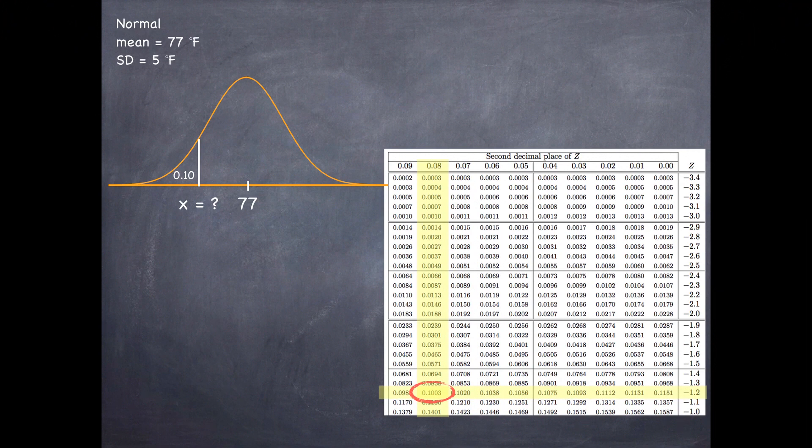It makes sense that this is a negative z-score because we're located below the mean and the z-score for the mean is 0. So anything below the mean is going to have a negative z-score, anything above the mean is going to have a positive z-score.